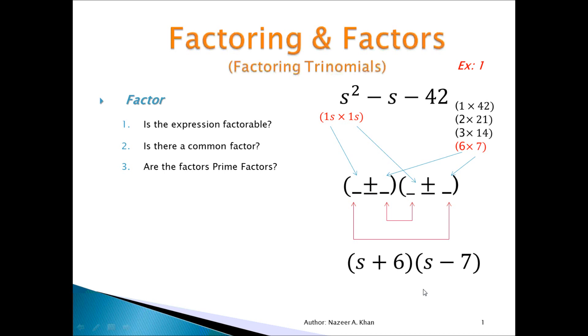The last thing that we have to do now is to check our work, and I'm going to use FOIL to check my work. S times S will give me S squared minus 7S plus 6S will give you minus S, and 6 times minus 7 will give you minus 42. So, we could feel confident that we have the proper factor.